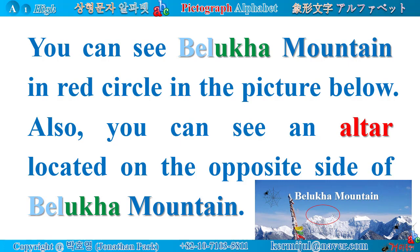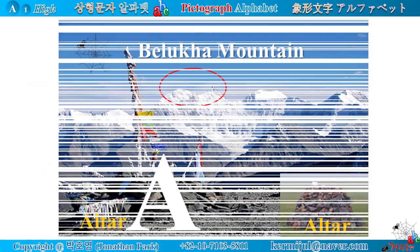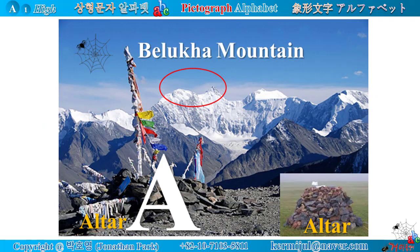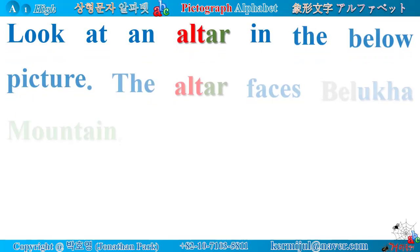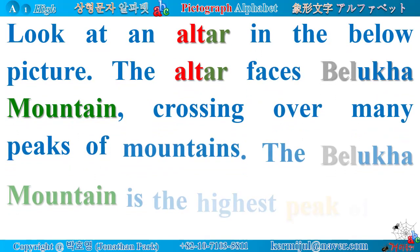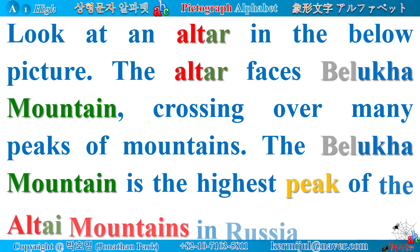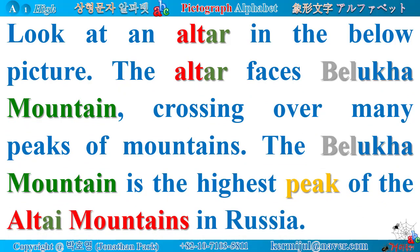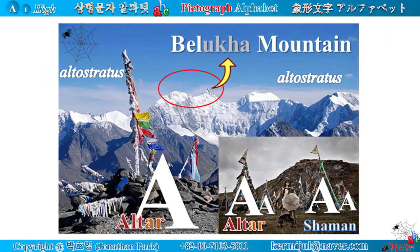Also, you can see an altar located on the opposite side of Belukha Mountain. From there you can see Belukha Mountain on the opposite side. An altar in the picture below faces Belukha Mountain, crossing over many peaks of mountains. Belukha Mountain is the highest peak of the Altai Mountains in Russia. The peak in a red circle is Belukha Mountain — there is an altar on its opposite side. The altar looks like the alphabet A.